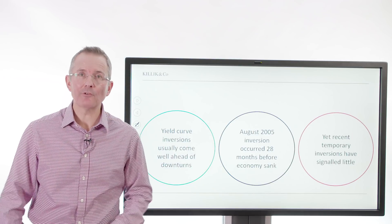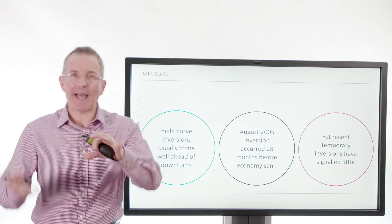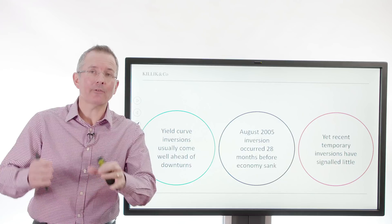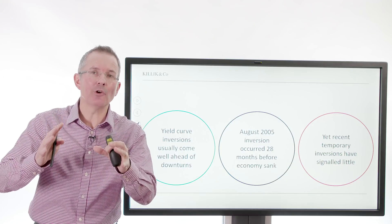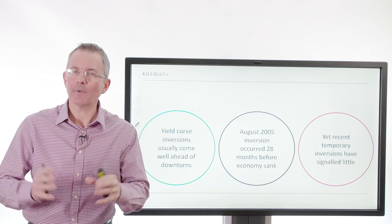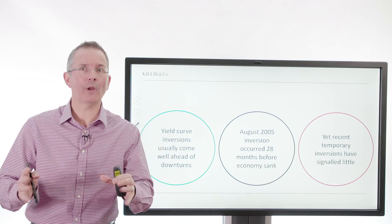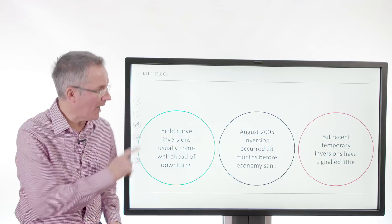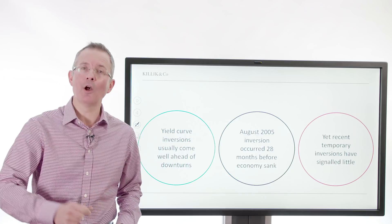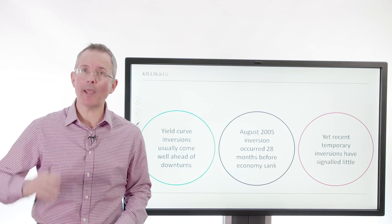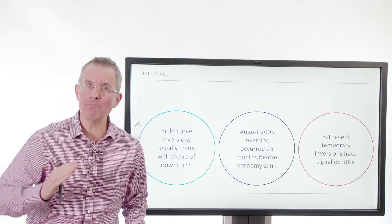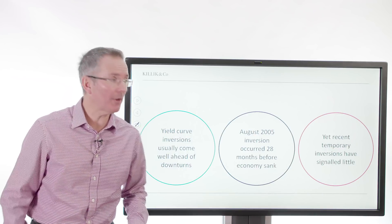Recent temporary inversions, on the other hand, signal little. There have been flattenings and inversions at the short end in particular — the shorter dated maturity IOUs — and people have said that's actually done very little in terms of recession warning over the last few years. But going back a bit further, the last seven recessions you could argue were predated, albeit with a time lag, by one of these inversions — particularly where what you're seeing at the short end is then mirrored further out down the curve.